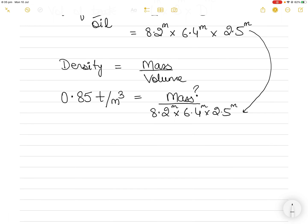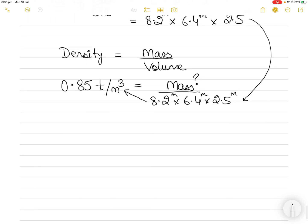So if I want to find out mass I will take all these values to the other side of the equal to sign and then mass will be equal to 0.85 ton per metric cube or ton divided by metric cube multiplied by 8.2 meters, 6.4 meters and 2.5 meters all multiplying with each other. The answer of which is 111.52 tons.